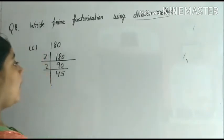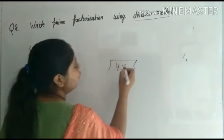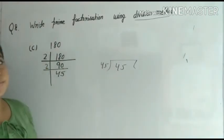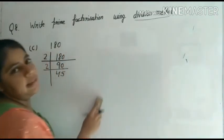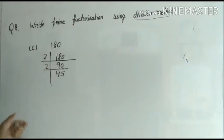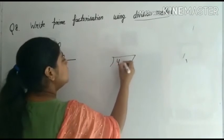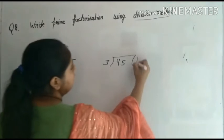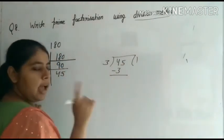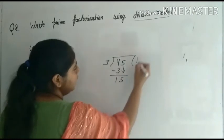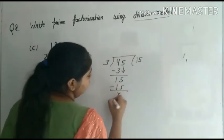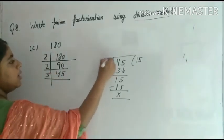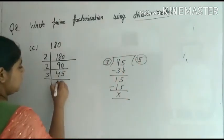Smallest number — although 45 is also divisible by 45 itself, that would be the greatest number. We go from smallest to largest. So divide 45 by three — it divides exactly. Three ones are three; four minus three is one. Three fives are fifteen; fifteen minus fifteen is zero. Divisor three goes in this place; quotient fifteen goes in this place.